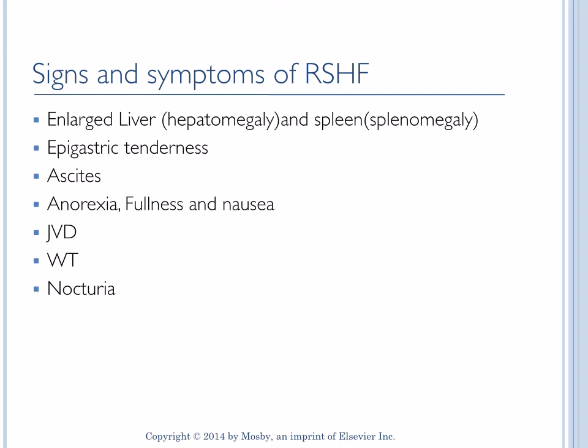There will be epigastric tenderness. The liver and spleen have a capsule around them; this capsule does not like to stretch because it is filled with nerves, and it hurts when the nerves are stretched as the organs become swollen. So there will be epigastric discomfort and right upper quadrant tenderness in the abdomen.